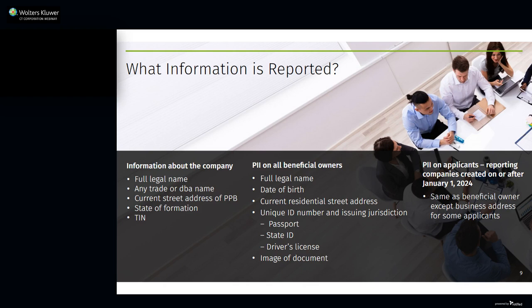Now let's see what information has to be reported by a reporting company. All reporting companies have to provide information about the company in their initial reports and provide personally identifiable information about all of their beneficial owners. Reporting companies created on or after January 1, 2024 also have to provide personal information about their company applicants. The reporting company will have to certify that the information it reports is true, correct, and complete. Regarding the reporting company itself, the initial report must include: the full legal name of the company, any trade or DBA names whether registered or not, a complete current street address of its principal place of business in the United States, its state of formation, and its IRS taxpayer identification number.